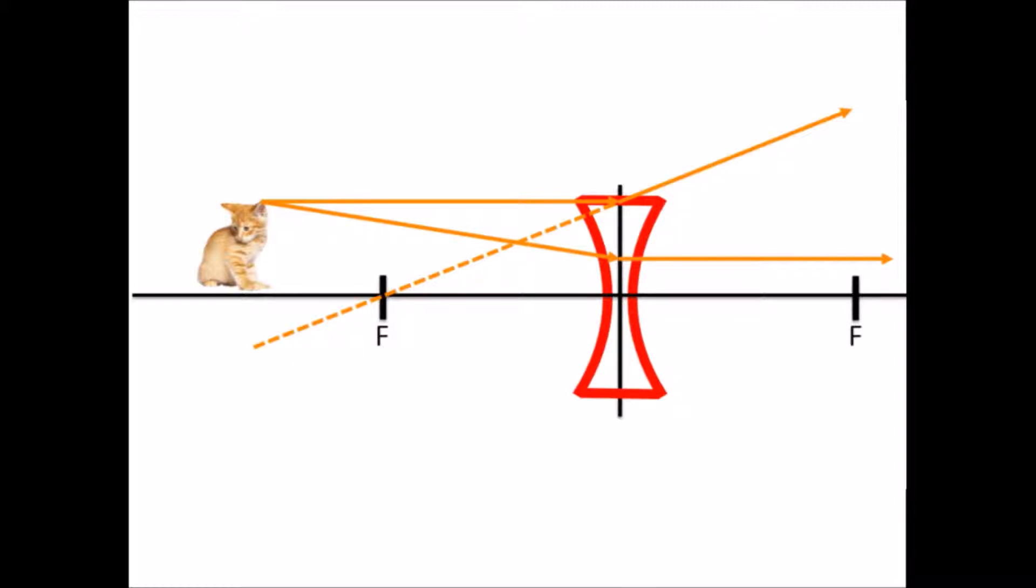Notice anything strange? The rays do not converge. In fact, they diverge and spread apart. This is why concave lenses are often called diverging lenses. We need virtual rays to converge and make an image.